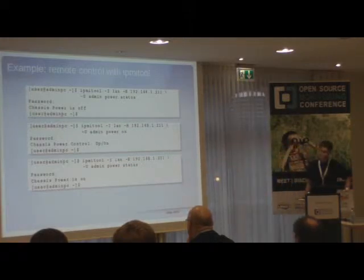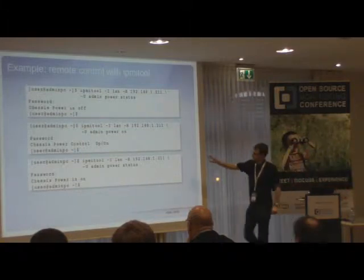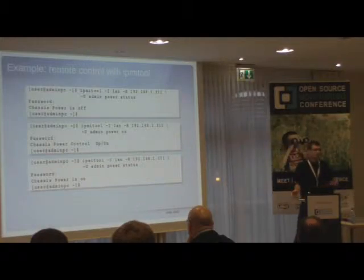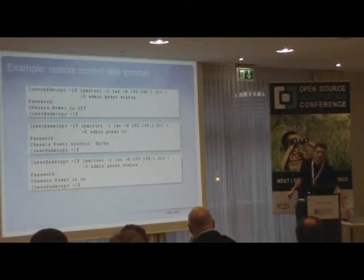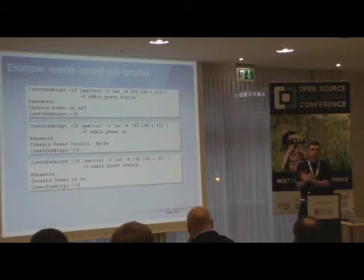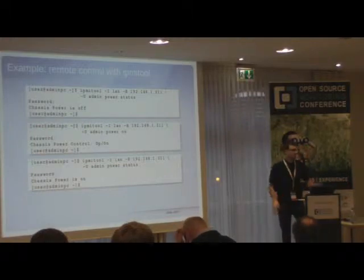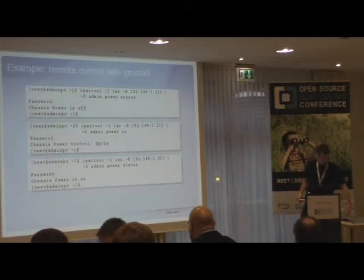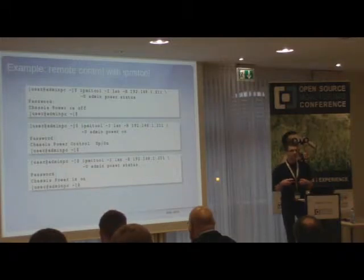It's important to note that the BMC IP address has nothing to do with the IP address of the operating system of the server — it's really an independent IP address. Depending on the server, you can use an individual NIC for that, or you can share the first or second onboard NIC. It just depends on how many ports you have. If you have a dedicated hardware management LAN, you use the dedicated port; otherwise you can use the same network interface as the operating system, with a different MAC address, or use VLANs.